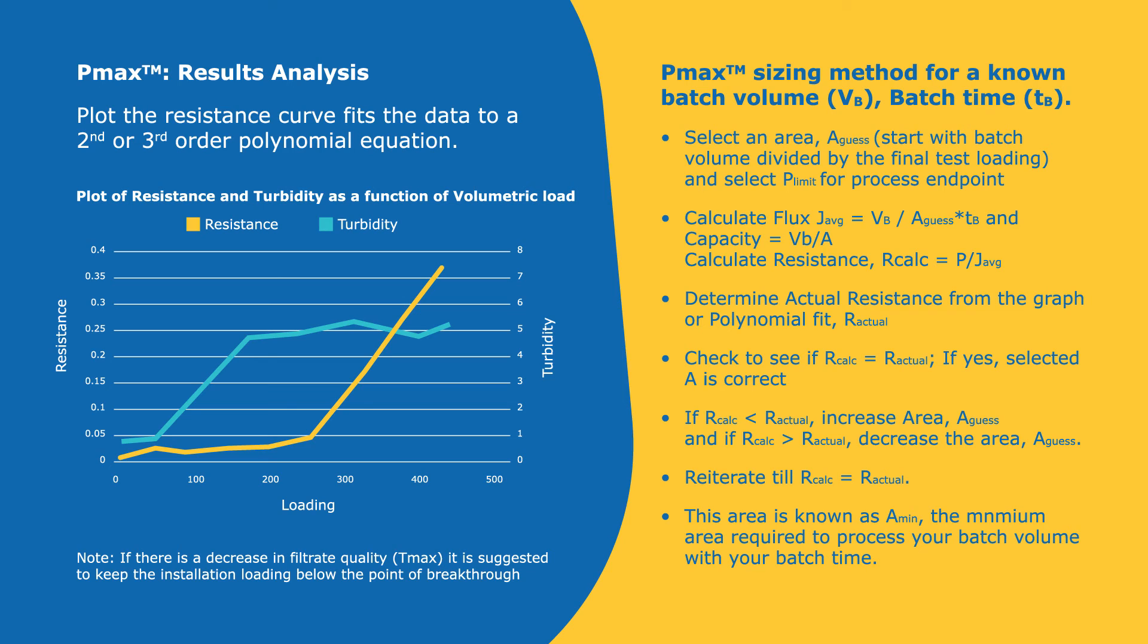So if your r calculated is equal to your r actual, then you have made the correct guess for area. If your r calculated is less than your r actual, then you need to increase your area for a guess and start the calculations over again. And then if the vice versa was the case, so that r calculated was greater than the r actual, you would decrease your a guess value. And then you just continue to reiterate until your r calculated is equal to or as close as you can get it to your r actual. And this area that you've been calling a guess is now known as your a min, which is the minimum area required to process your batch volume within your batch time.